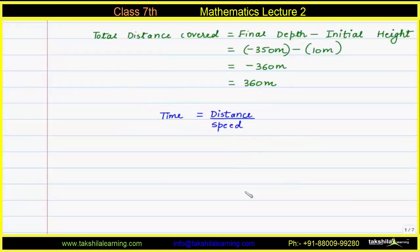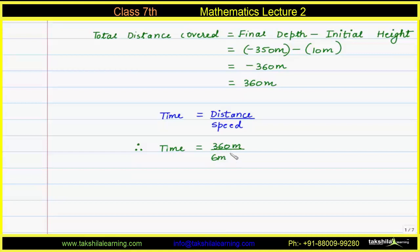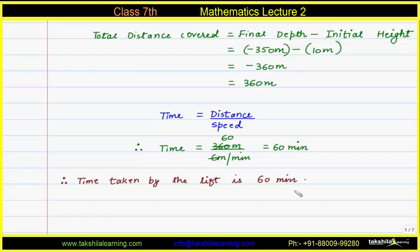We know that time is given by distance over speed. Therefore, time equals 360 meters divided by 6 meters per minute, which gives us 60 minutes. So the time taken by the lift is 60 minutes. This is our answer.